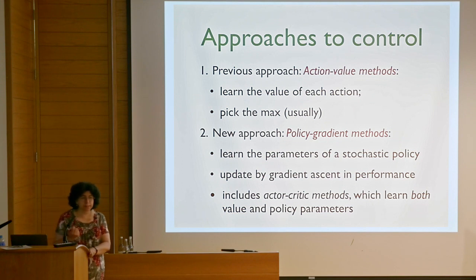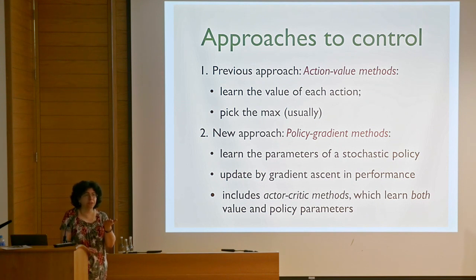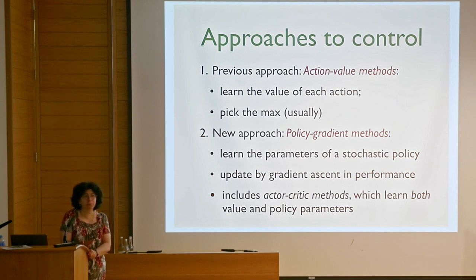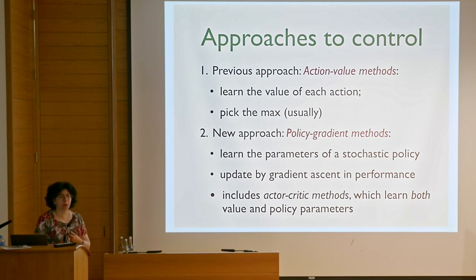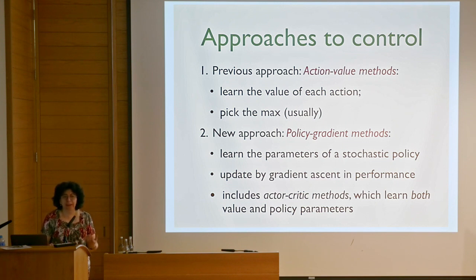Policies implemented in practice are all linear threshold policies: when the water level is above a certain threshold you open linearly, and then at some point you stop. The value function is complicated because it depends on many things that vary in complicated ways and we don't have much data. But the policies are very simple. This is often the case in continuous control—robotics is the same thing. People have certain controller types like linear Gaussian controllers or PID controllers that they want to parameterize, and it's not that bad.